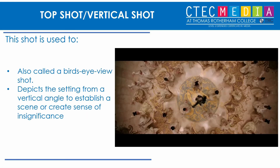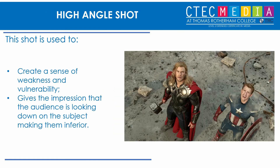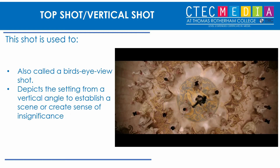The top angle or vertical shot is also called a bird's eye view. It's similar to an establishing shot — you often see vertical shots depicting the setting from directly above. It establishes a scene and can sometimes be used as an extreme version of a high angle shot to create a sense of insignificance or weakness, though they're not as common as high angle shots.